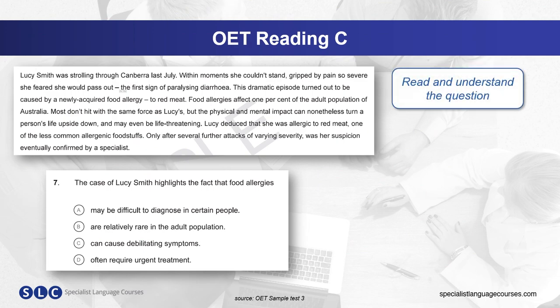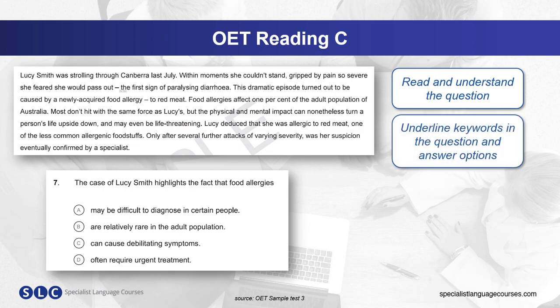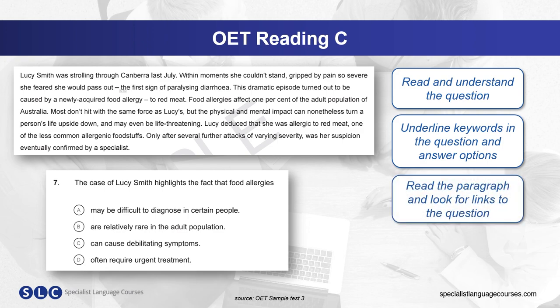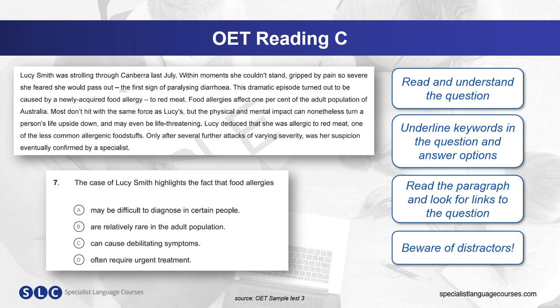First, you need to read and understand the question, highlighting any keywords to help you. You can then read the answer options, underline the keywords and notice all parts of the answer option. Then read the paragraph and look for links to the question. Eliminate any incorrect answers and beware of distractors — just because an option is mentioned in the text doesn't mean it answers the question. Many people find it more effective to read the paragraph before reading the options so they are not distracted. Try both ways and see which works best for you.